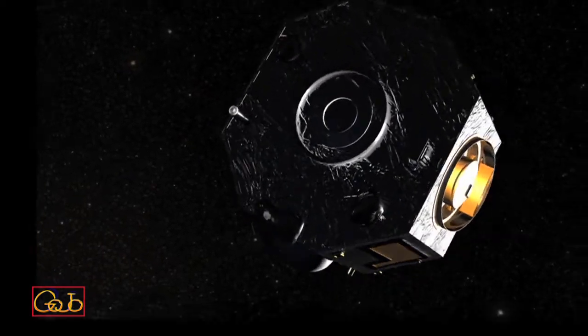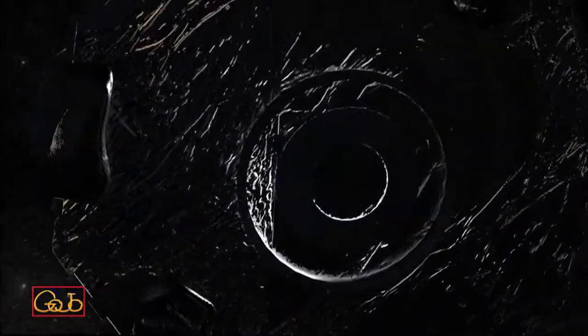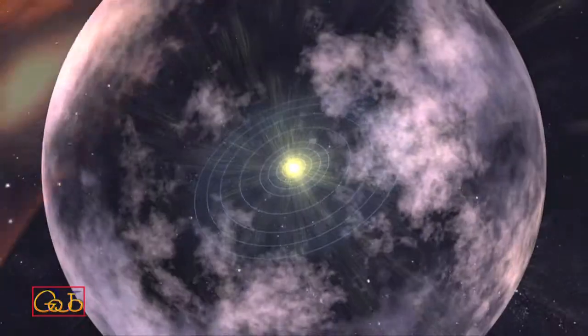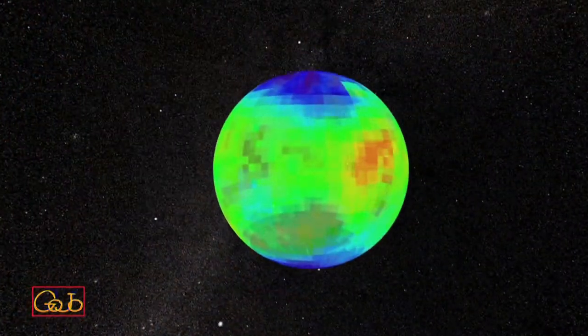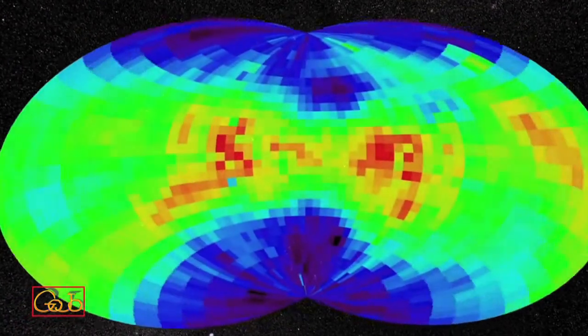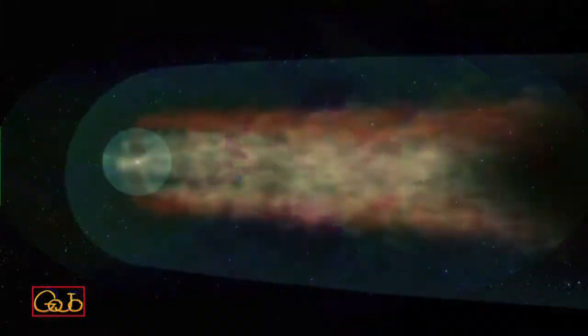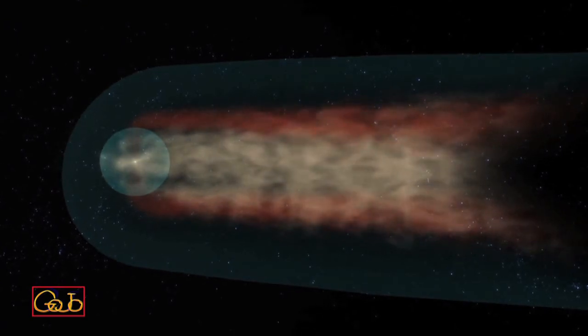NASA's Interstellar Boundary Explorer, or IBEX, recently mapped the boundaries of the solar system's tail, called the Heliotail. By combining observations from the first three years of IBEX imagery, scientists have mapped out a tail that shows a combination of fast and slow moving particles.